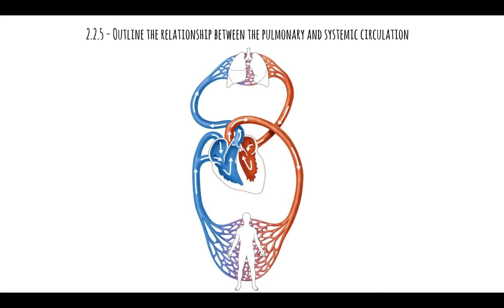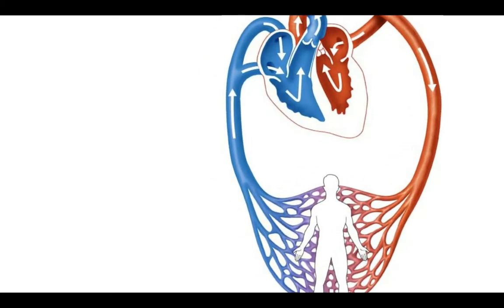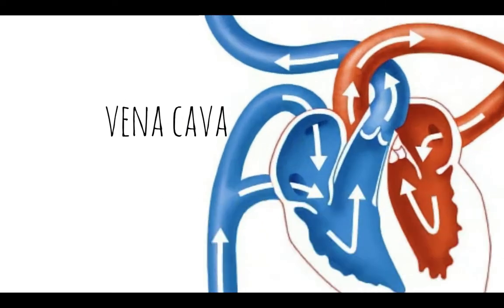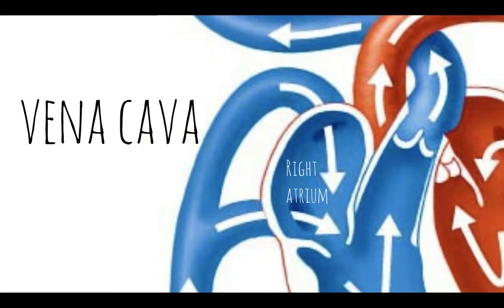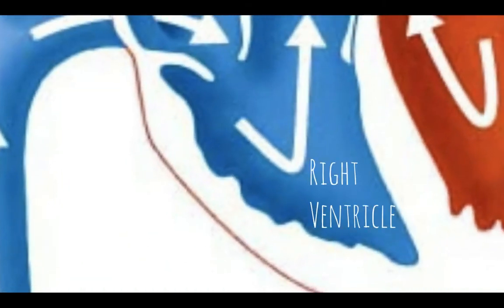In today's video we're going to be looking at outlining the relationship between pulmonary and systemic circulation. The best way to understand this is to go on a journey that the blood takes around the body. We start with deoxygenated blood as it returns back to the heart in the vena cava, then enters the heart via the right atrium, travels through the tricuspid valve, and into the right ventricle.